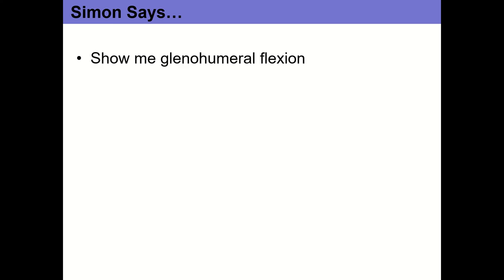With about ten minutes left, let's do a Simon Says review game. Simon Says: show me glenohumeral flexion — starting in anatomical position, palms supinated, going straight forward. Name three agonists for glenohumeral flexion: pec major, biceps brachii, anterior deltoid, and coracobrachialis. Latissimus dorsi is not an agonist here — it would lengthen. Name three antagonists: lats, posterior deltoid, long head of triceps, and teres major.